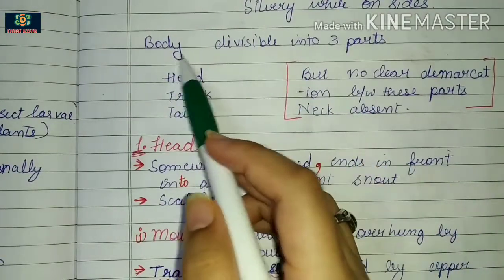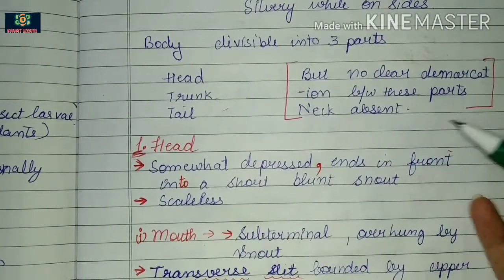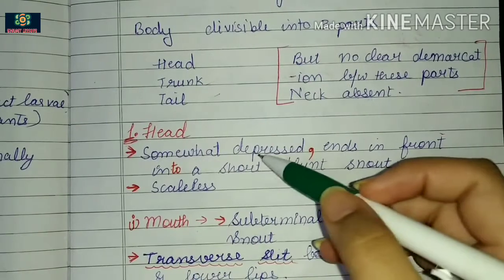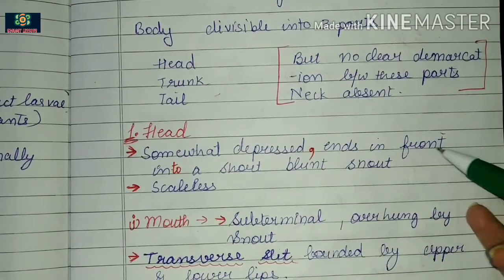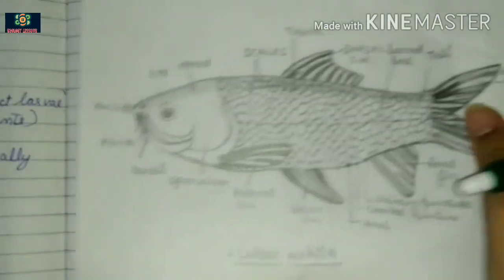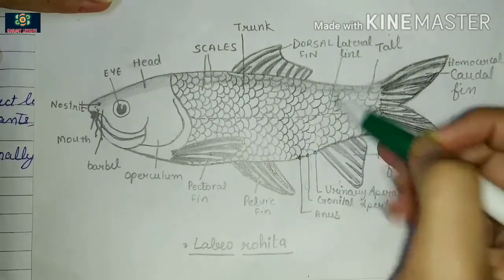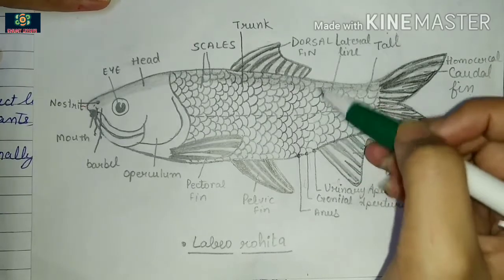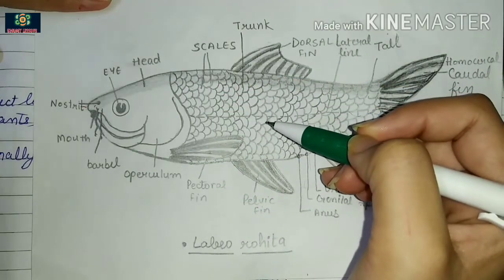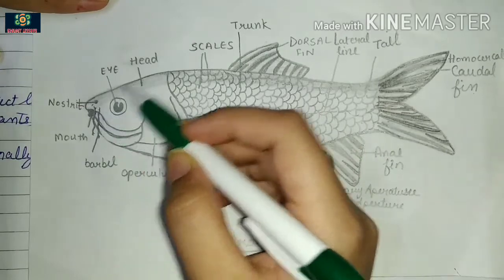The body is divisible into three parts: head, trunk, and tail, but there are no clear demarcations between them. The neck is absent. The head region is depressed and ends anteriorly in a short blunt snout. The head is scaleless.